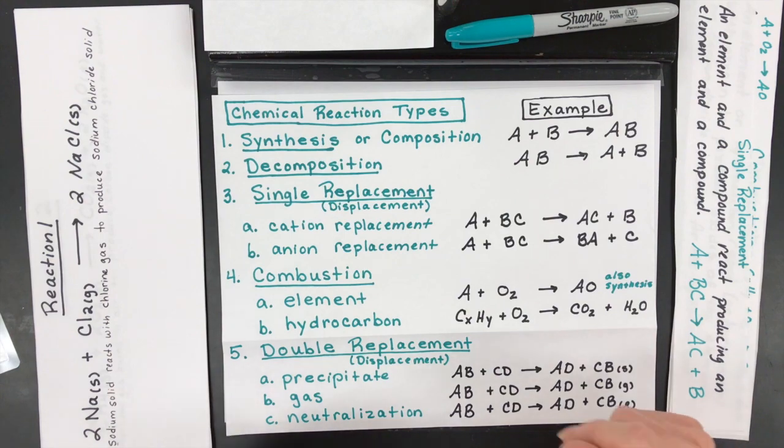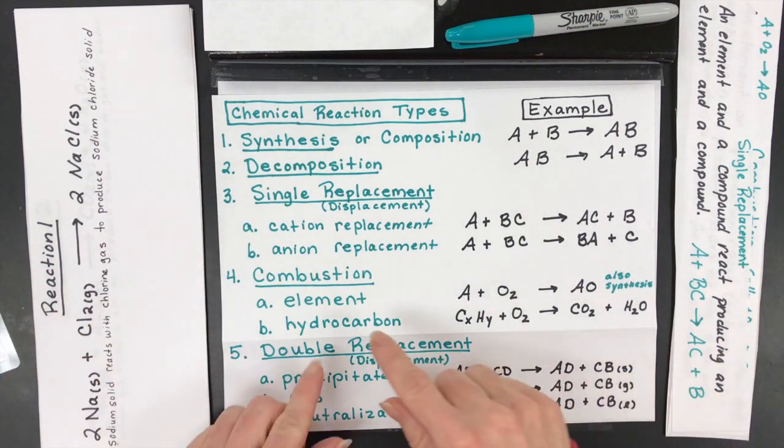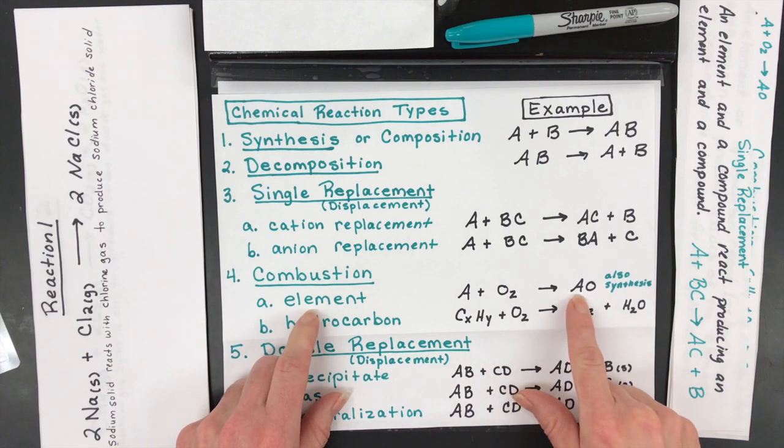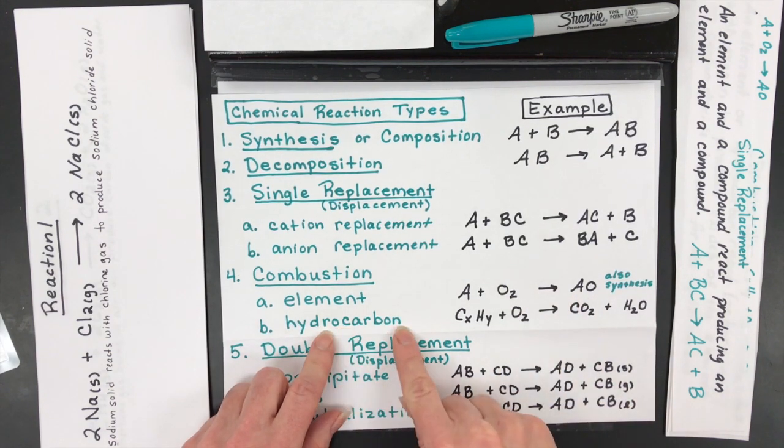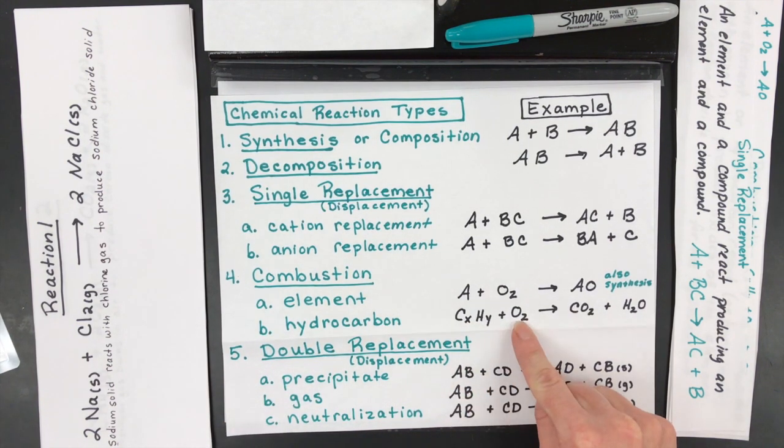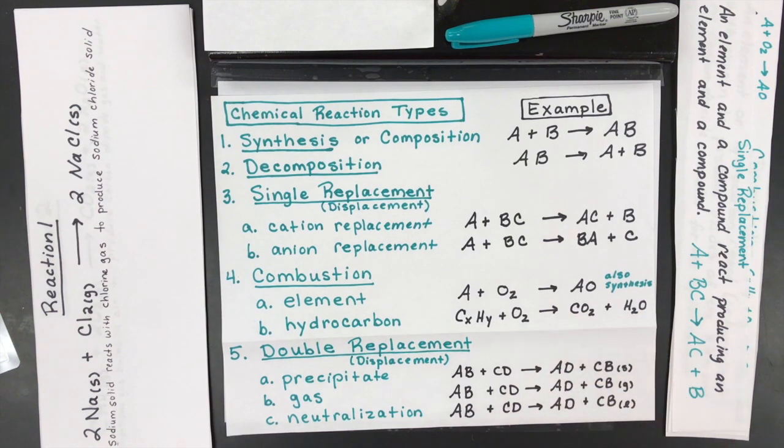You might have combustions. Everybody loves you're going to blow something up today. So you could combust an element and burn it in air and make an oxide, what's called an element oxide. Or hydrocarbons are common, burned in air like propane and butane and methane, combust them with oxygen from the air to make CO2 and water.